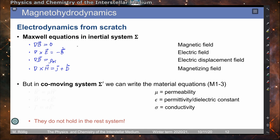When we move to the co-moving system sigma-prime, we can write our material equations in the primed system: the primed B vector equals the permeability times the magnetization in the primed coordinate system; the primed displacement vector is given by the dielectric constant epsilon times the E vector; and the current density in the prime system is the conductivity sigma times the E vector. This only holds in the co-moving system and not in the rest frame.